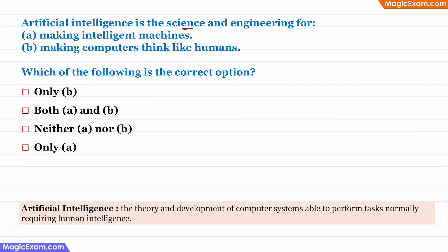Question: Artificial Intelligence is the science and engineering for which of the following? Here we are given two statements and we have to identify which is correct about Artificial Intelligence. Traditionally, computers follow instructions — however complex the instructions may be, the software running on the computer is giving it instructions on what to do, and the computer is just following instructions.